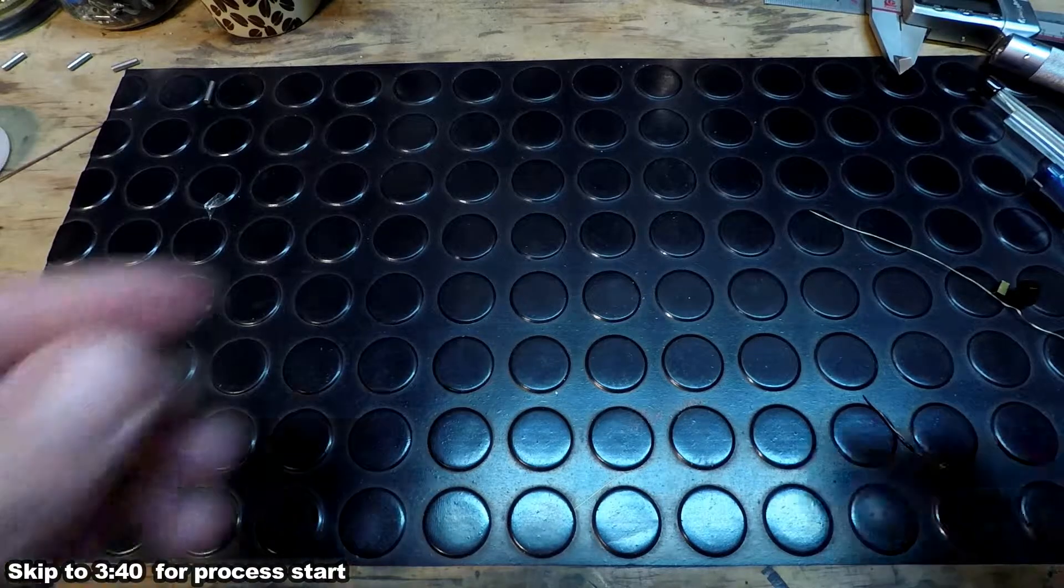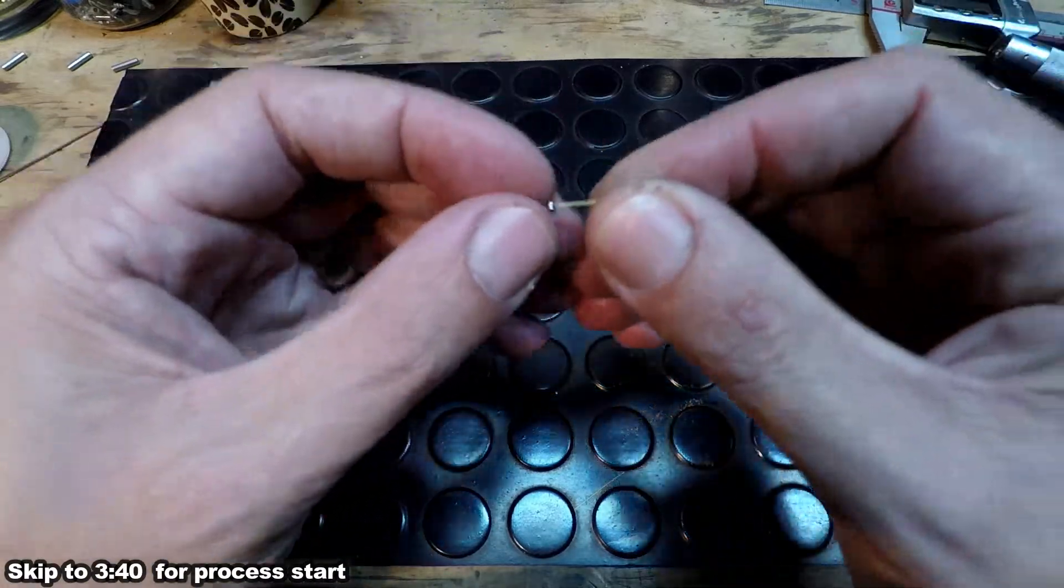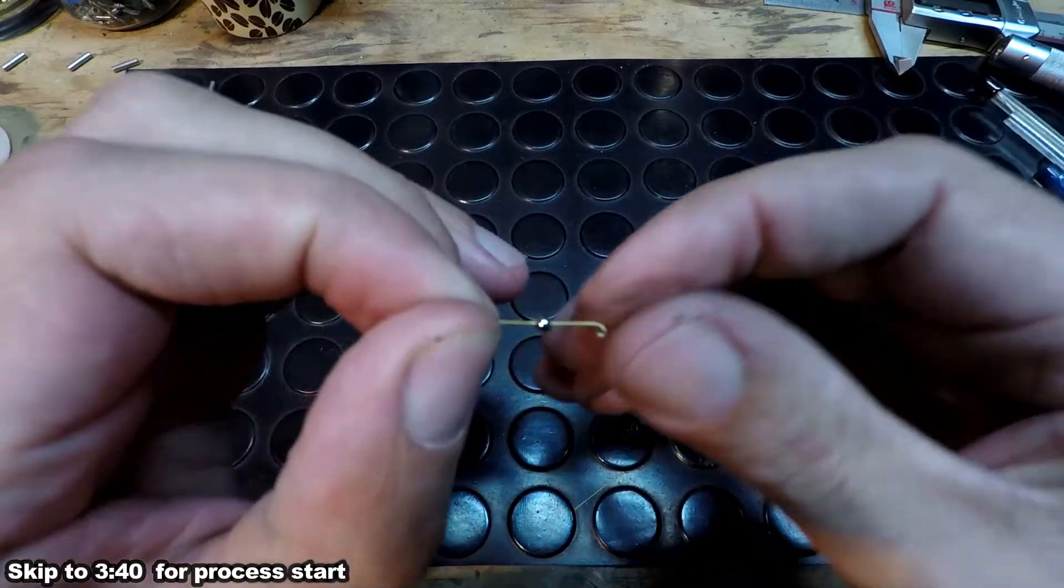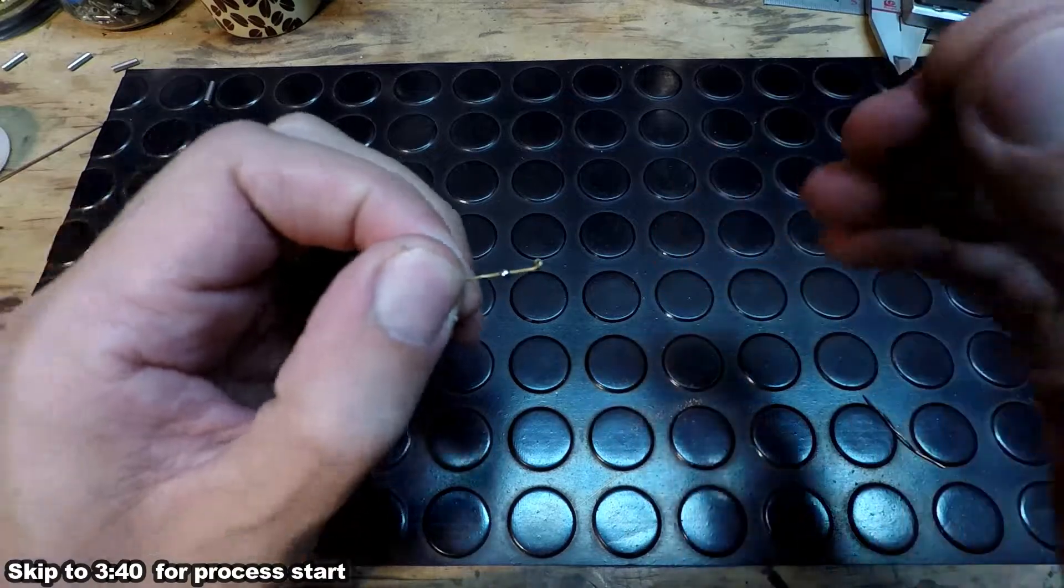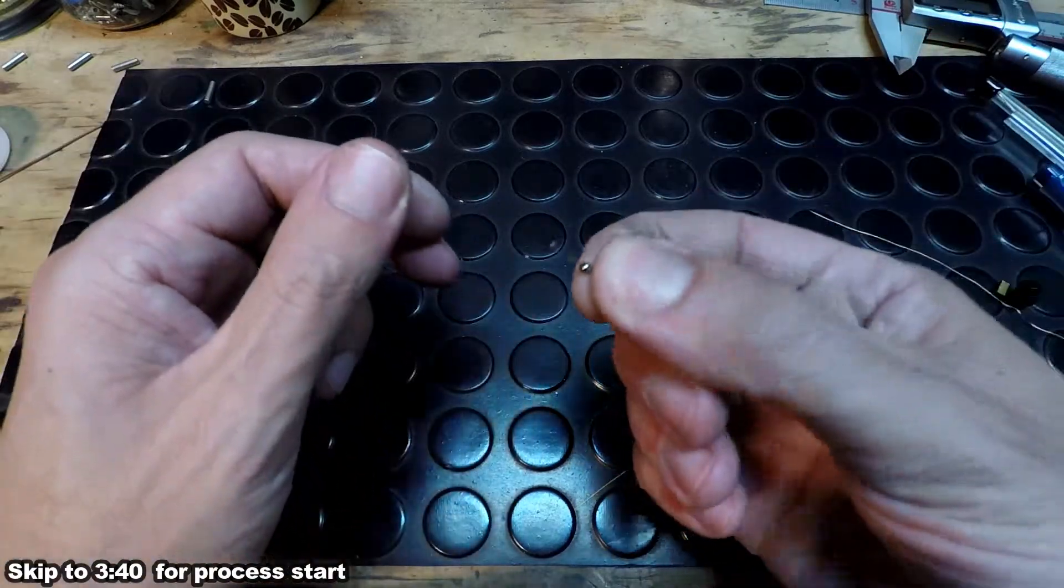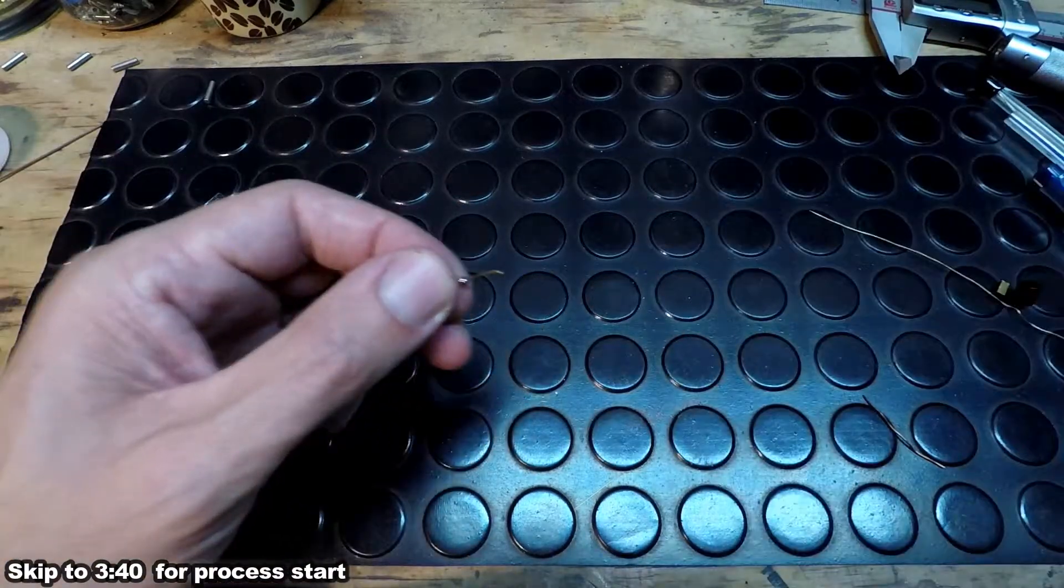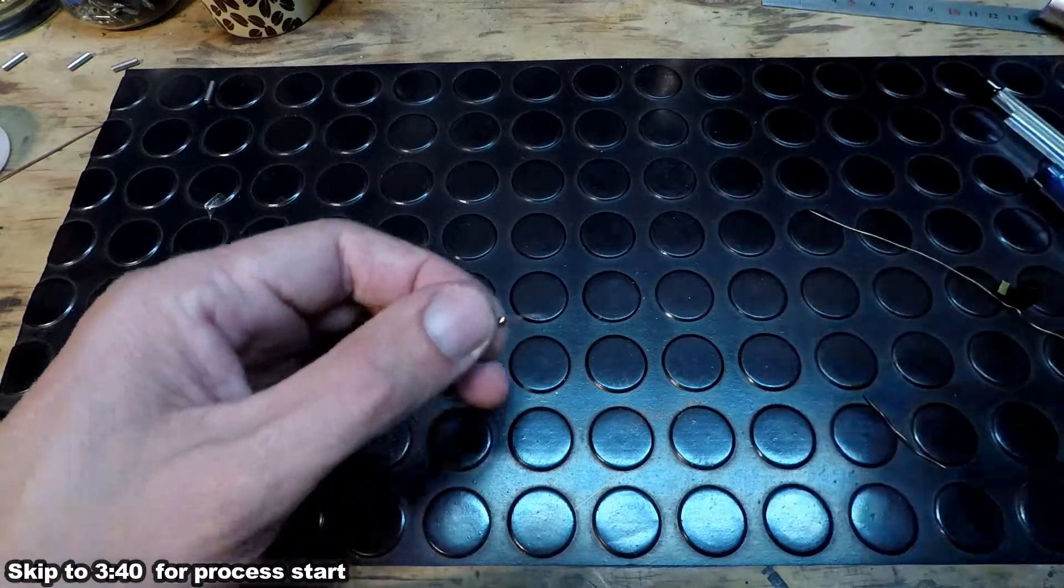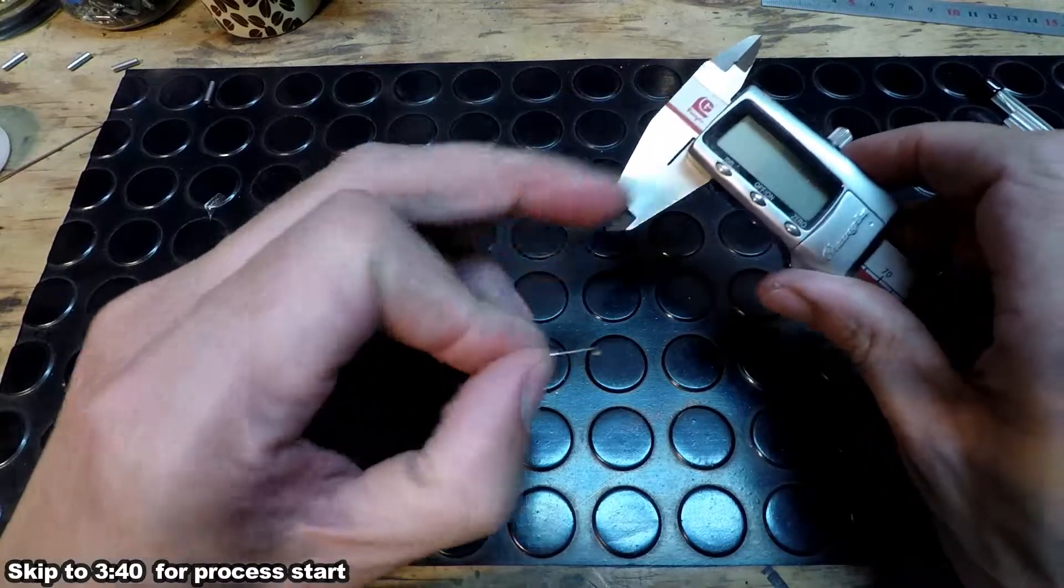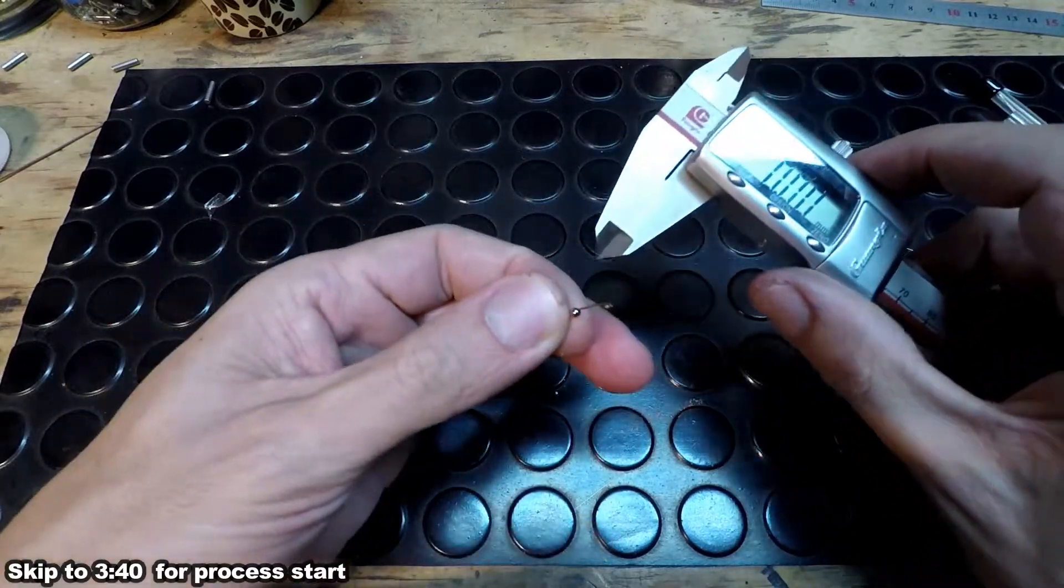What we're making today is little demo pieces, tiny little ball bearings with a 0.5 millimeter hole through them. This is a good example of what the machine can do and it's always nice to have this around while I'm raising funds for this unit so I can show people the capabilities.